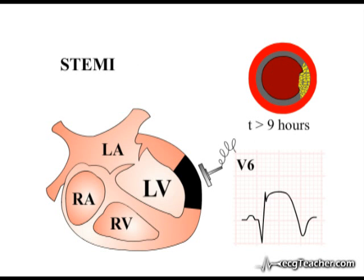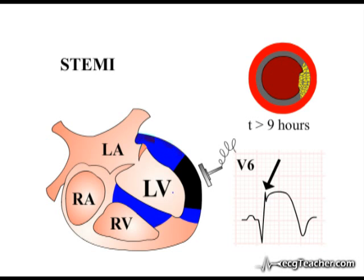When the full thickness of myocardium under lead V6 is dead, lack of depolarizing flow through the dead segment results in a reduction of R wave activity in the lead. With no current traveling through the dead left ventricular muscle underneath it, the lead now has an uninterrupted view of septal depolarization. In effect, the infarct has created a window through which lead V6 can see the entire process of septal depolarization, and the recorded Q wave becomes deeper and more prolonged. As a rule of thumb, a pathological Q wave tends to be deeper than two small squares and greater than one small square in duration.